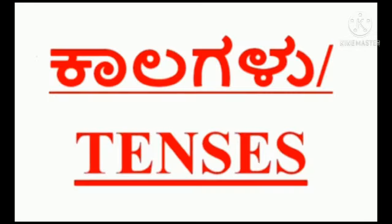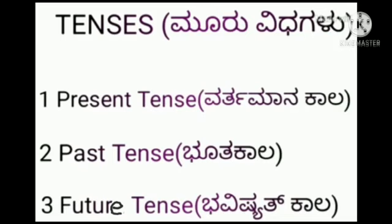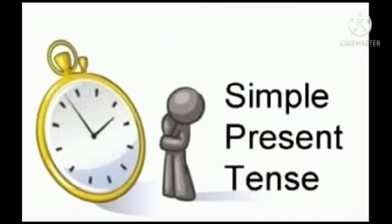There are three types of tenses. Present tense means what is happening now — it is called simple present tense.